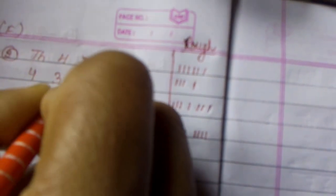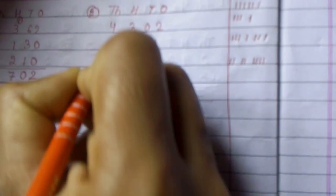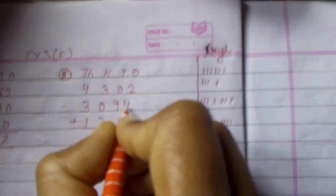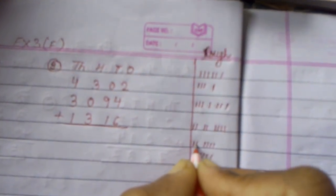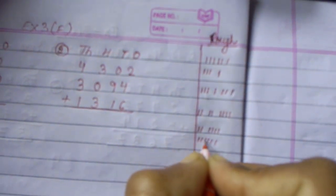TH for 1000, H for 100, T for 10, 0 for 1. So 4, 3, 0, 2, that is 4302. Then 3094, 1316. Put the sign of addition. Now we will again make lines and count. Here 2 is there, so 2. Then 4: 1, 2, 3, 4. Then 6 is there, so 1, 2, 3, 4, 5, 6. Now we will count all together: 1, 2, 3, 4, 5, 6, 7, 8, 9, 10, 11, 12. So here 12.